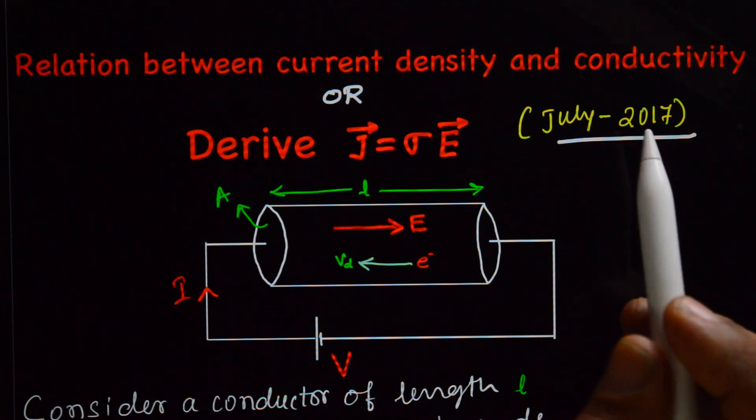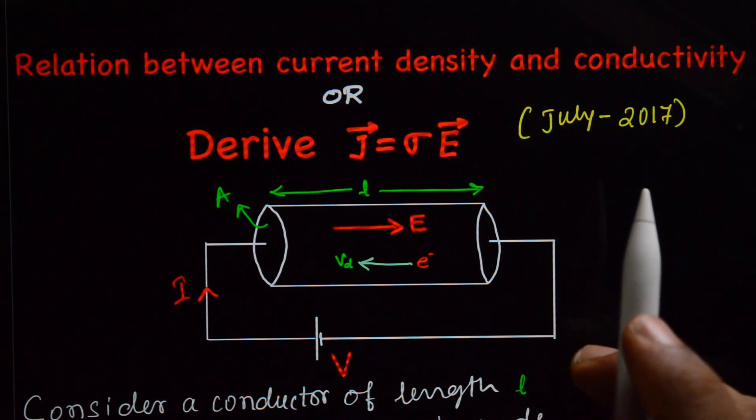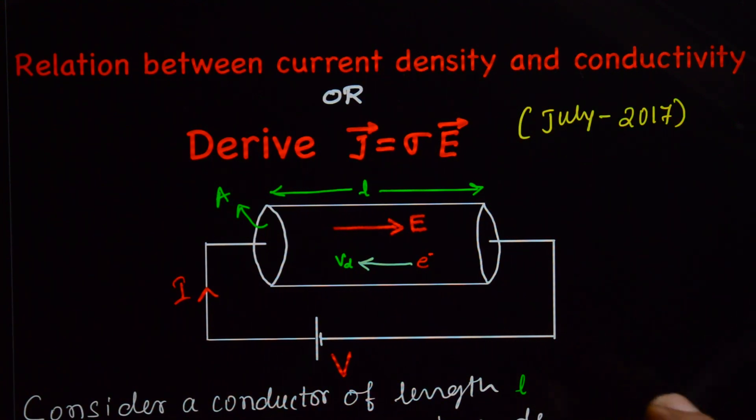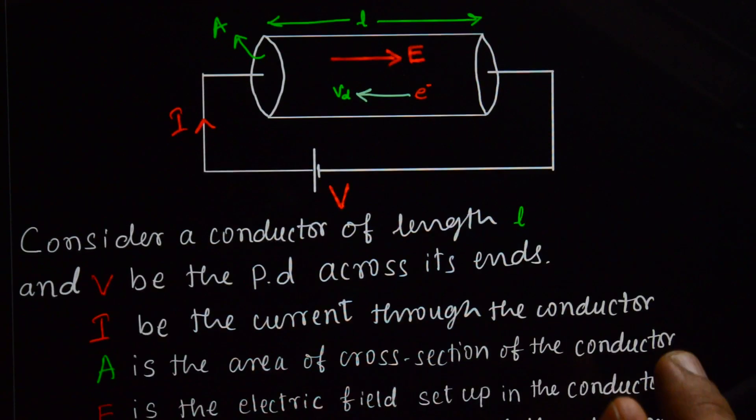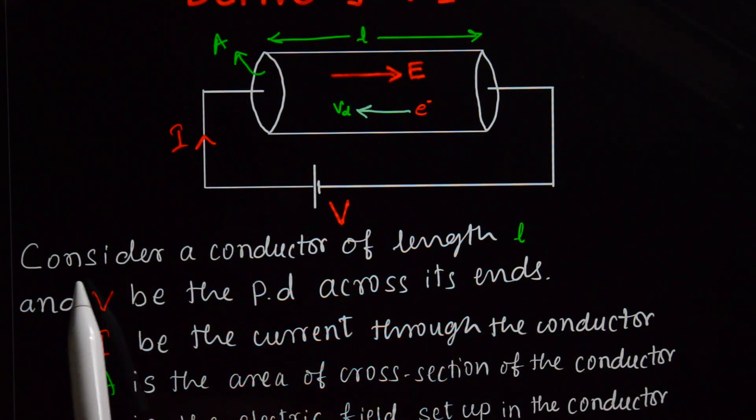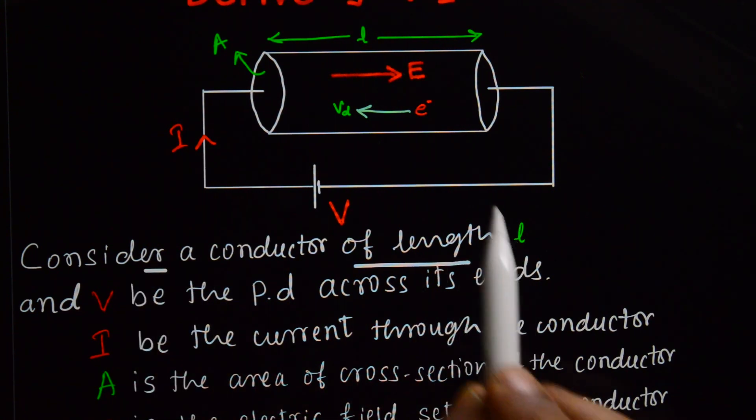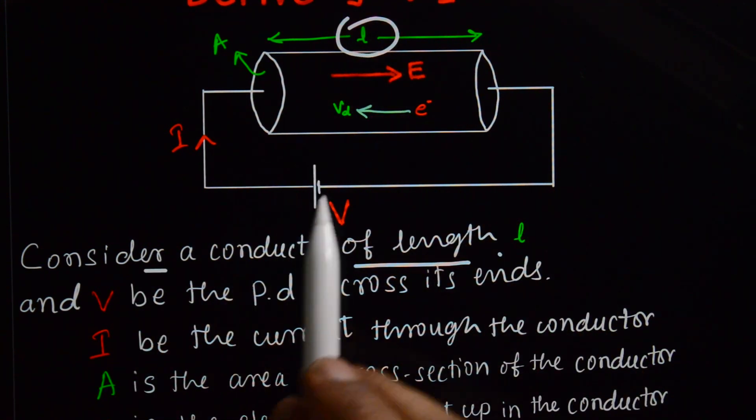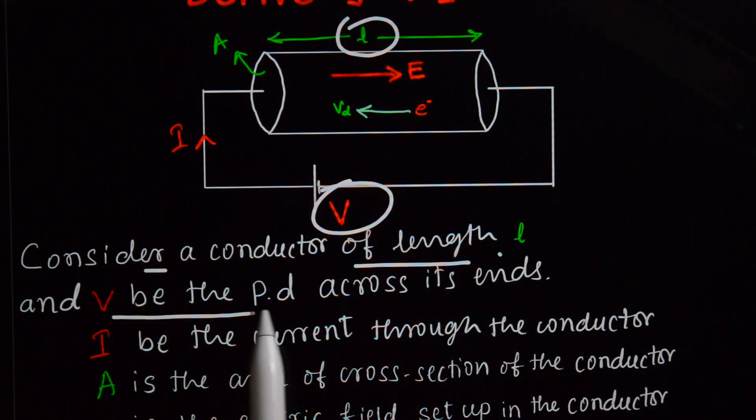And here for that, consider a conductor, its length is L. And V, that is, potential difference across its ends.